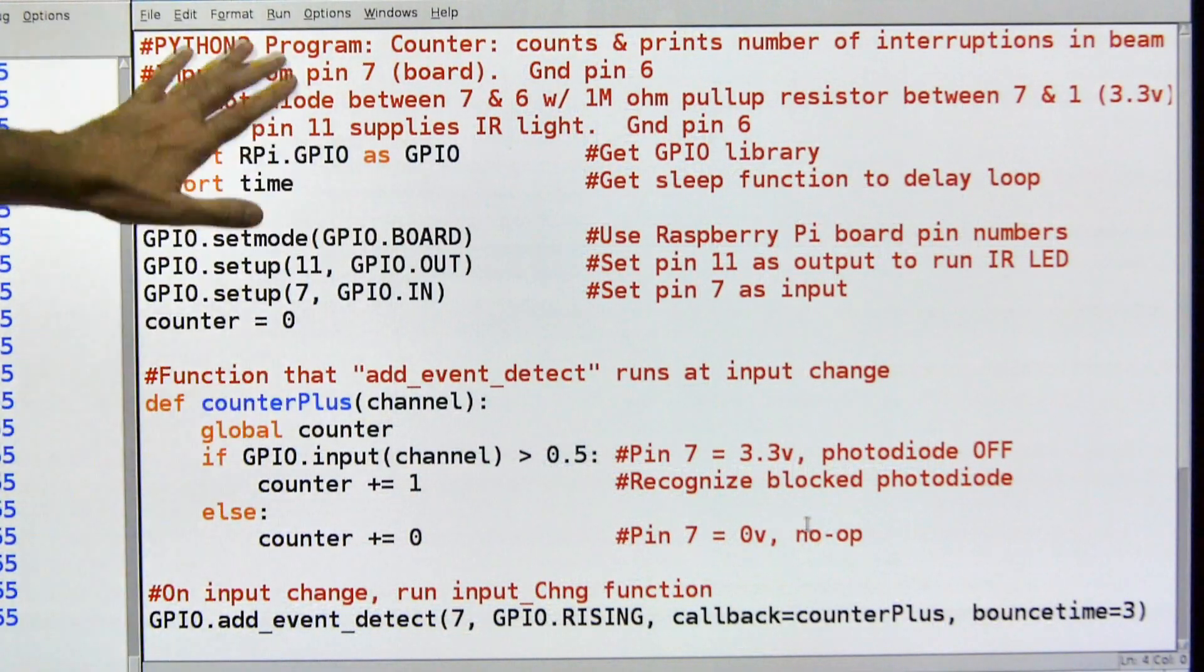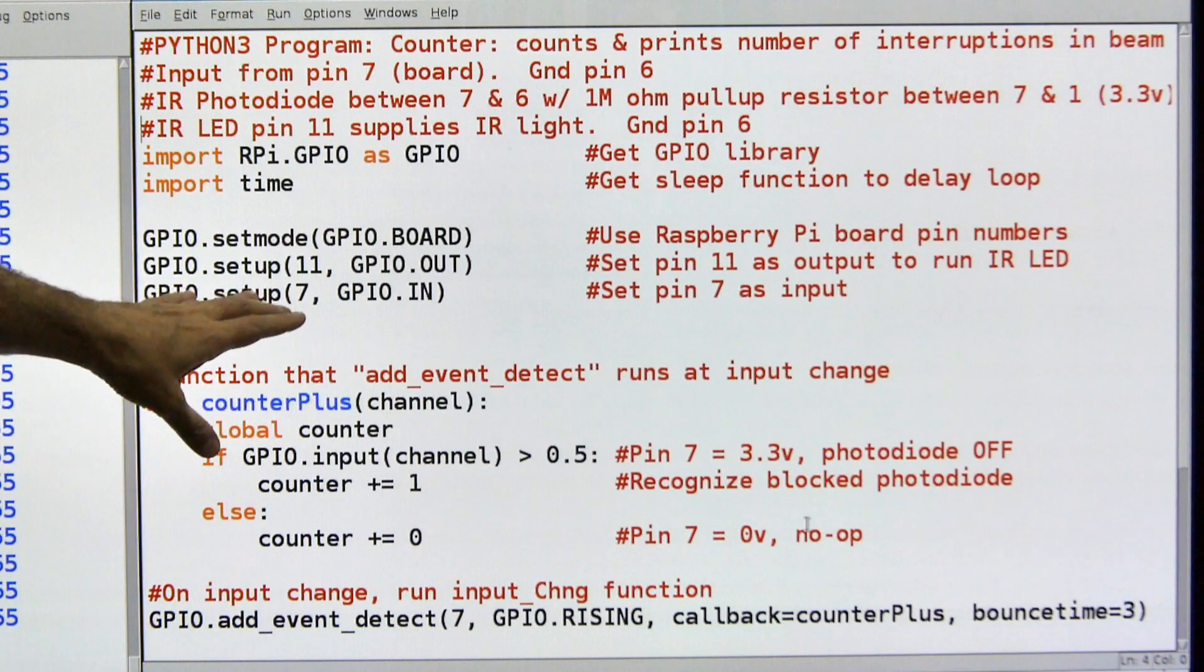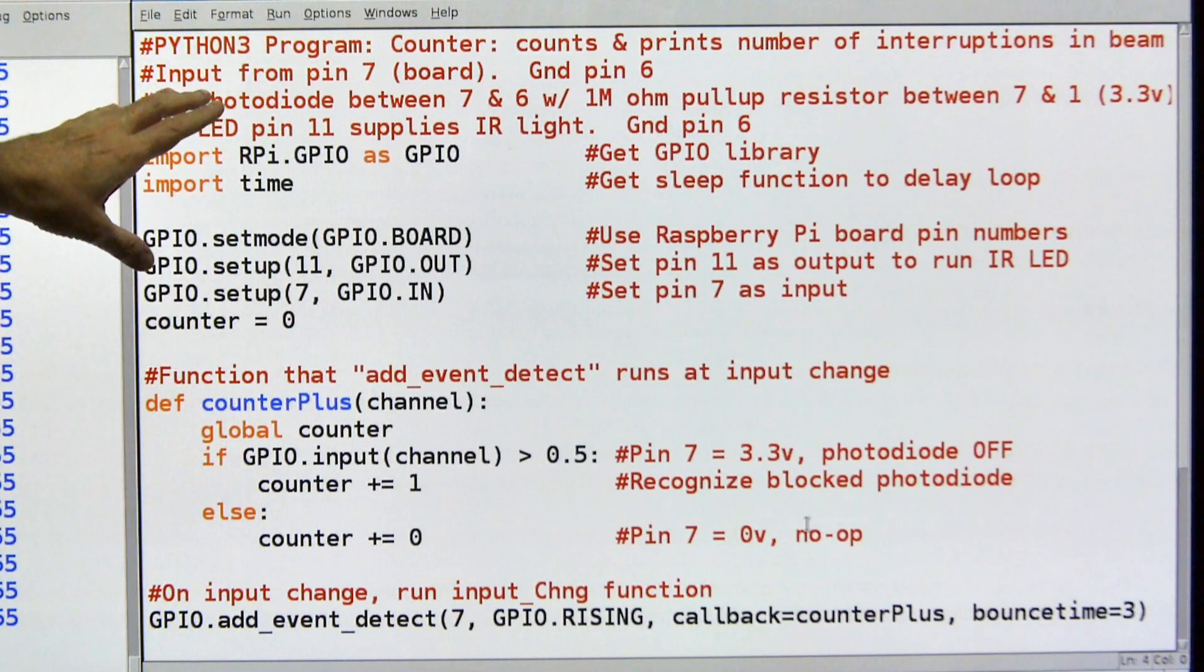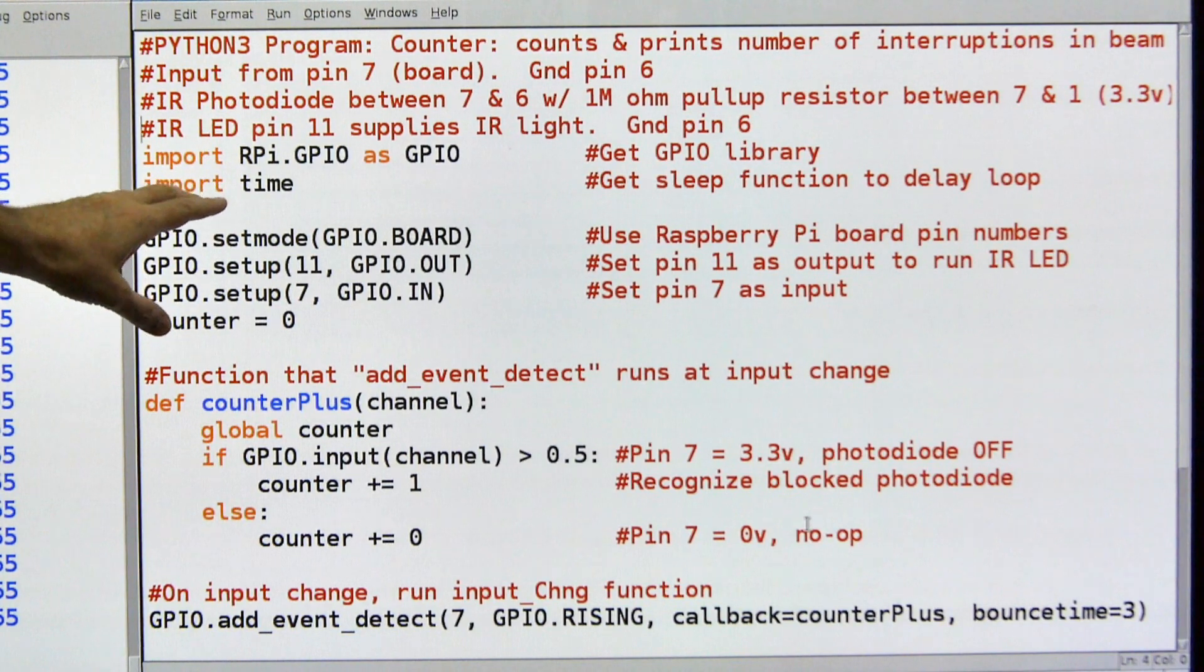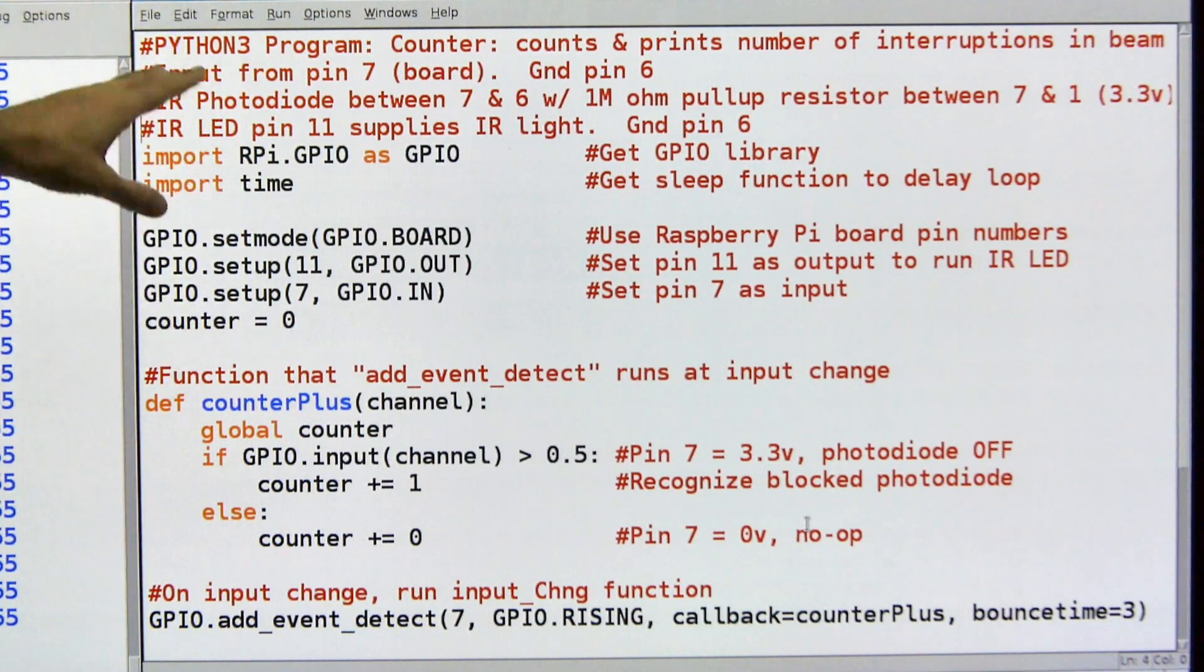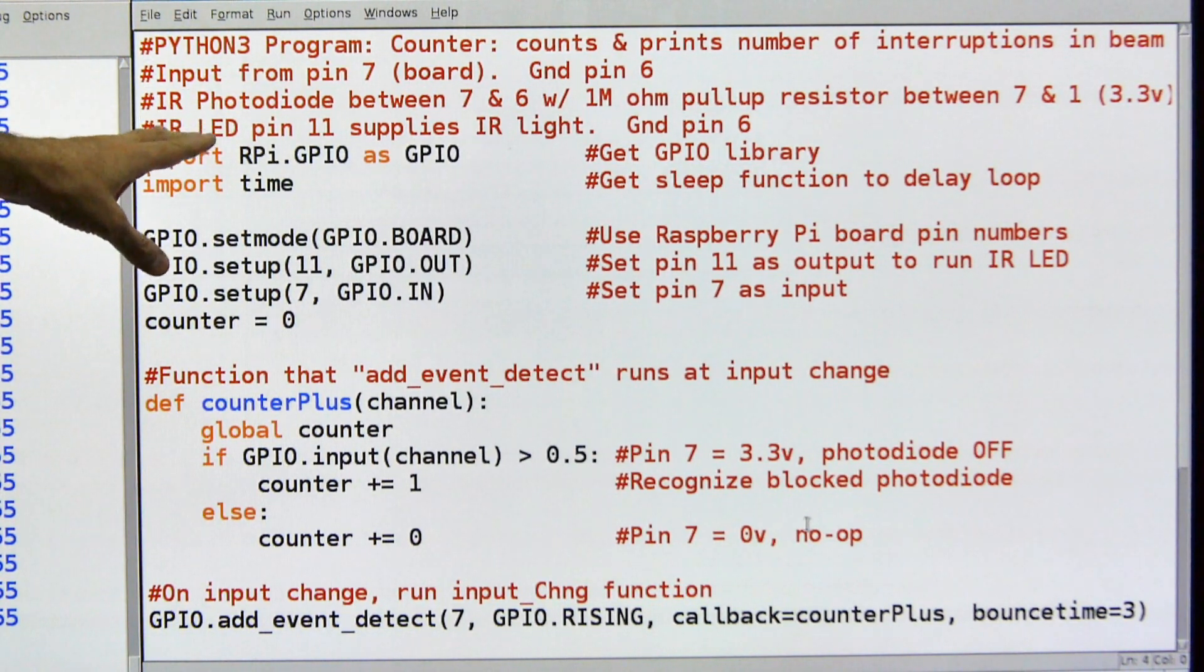This is the software behind the hardware we were just looking at, and it's very similar to the last thing I just did, however, it got a couple of twists in it in order to count. I wrote it for Python 3. It's going to count the number of times that that beam is interrupted that we talked about.